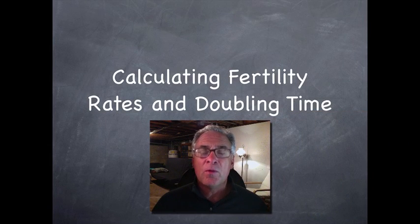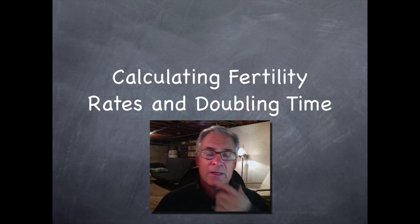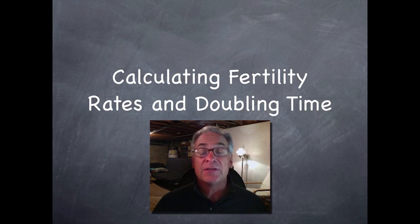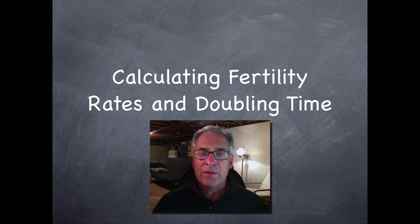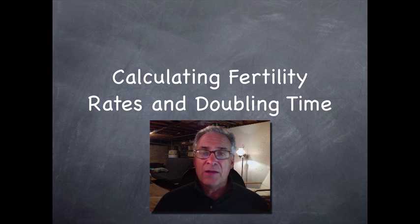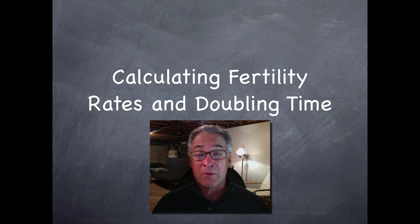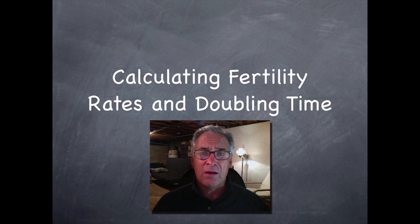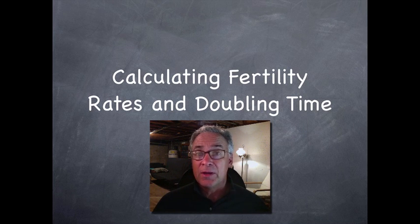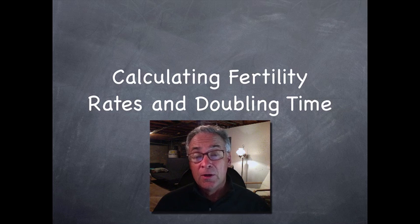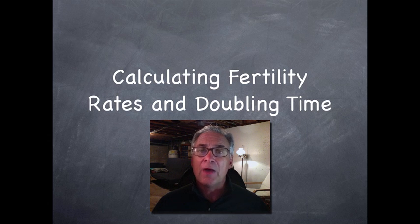Welcome class. I want to take a few moments to explain some of the math behind calculating fertility rates and doubling time. You should have gotten a packet that has a problem set with three different countries: A, B, and C. Each one has different numbers for birth rates, death rates, immigration, and emigration. You're supposed to calculate the different kinds of birth and death rates, and then tell me what the doubling time is. With that information, you should be able to tell me if this is a developing, developed, or pre-industrial country, and what's going on in their society based on the demographic transition model. Let's get started.